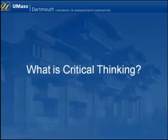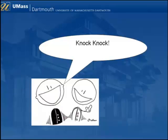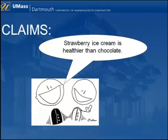Think about the types of things you say when you communicate with other people. When you're talking with your parents, texting your friends, or writing a paper, your words can be broken down into pieces that have different purposes. Sometimes you say something to express your preferences, like "I would like strawberry ice cream." Other times you may make a joke hoping to get a laugh. But often, when we communicate, we are making a claim about the world. We might say, "Strawberry ice cream is healthier than chocolate."